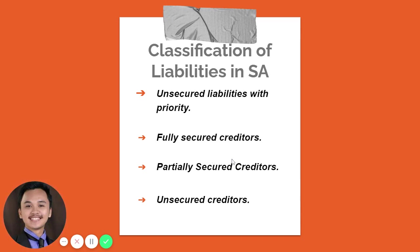The second type is fully secured creditors — these liabilities are collateralized in full by assets. For example, if inventory has a net realizable value of $100,000 and is used as collateral for notes payable of $75,000, the notes payable is fully secured since 100% of the credit will be paid. Partially secured creditors are those where the credit is not 100% secured — the net realizable value of the collateral asset is lower than the actual liability.